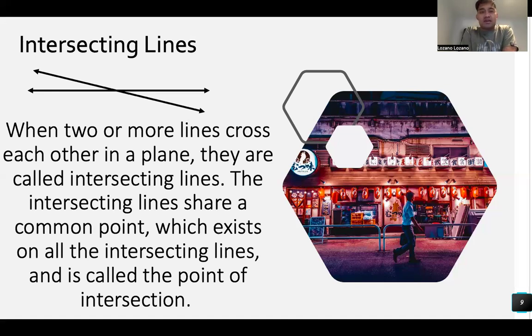Next. Ito naman. Nag-meet na sila. Nag-meet sila sa one exact point or one common point. We called it intersecting lines. So when two or more lines cross each other in a plane, they are called intersecting lines. The intersecting lines share a common point, may shinier sila sa common point, which exists on all intersecting lines. And it's called the point of intersection. In this example natin, yun yung nasa gitna, yun yung kanilang point of intersection where there na dun sila nag-meet dun sa point na yun.